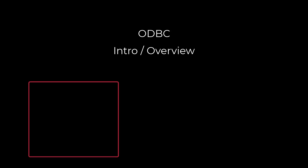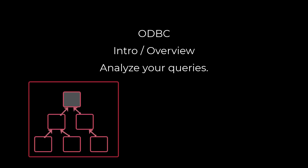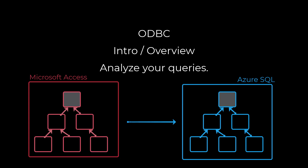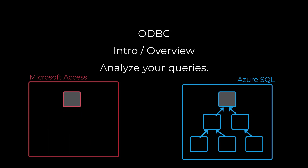You should start to look at your queries critically. If you have five queries that are really only used to feed one big query in your app, and only the big query is used, then move all of those queries into Azure SQL and link only your app to the big query. In my upcoming Azure SQL videos with Access, I'm going to show you how to do these operations so that you can get the maximum benefit from using Azure SQL.